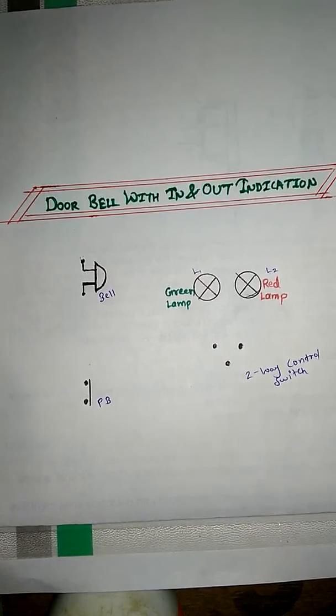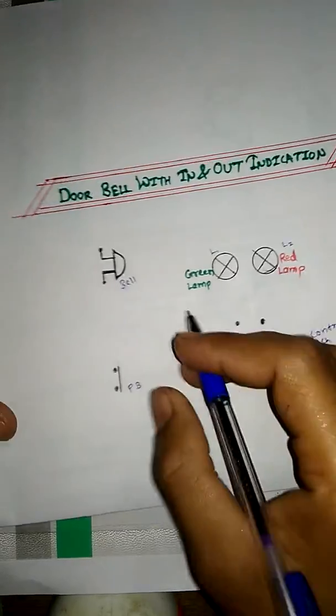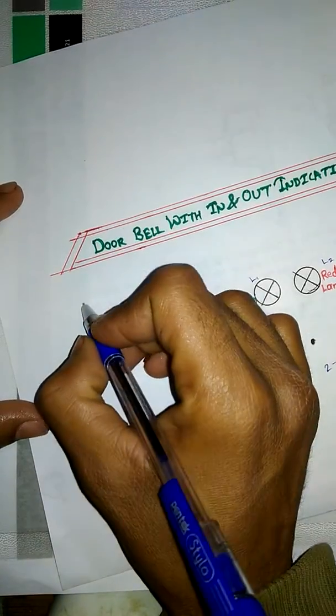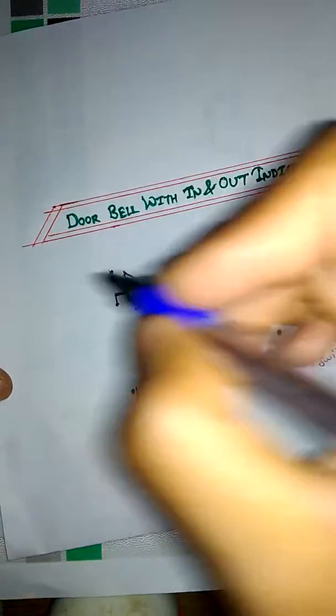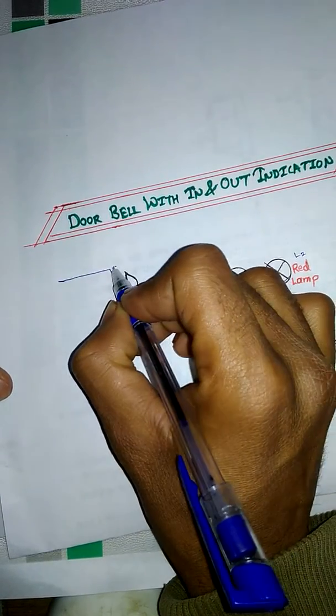Let us begin the connection diagram. First of all, we will start with neutral as it is easy to connect neutral to accessories. Give neutral to the push button, or bell push.